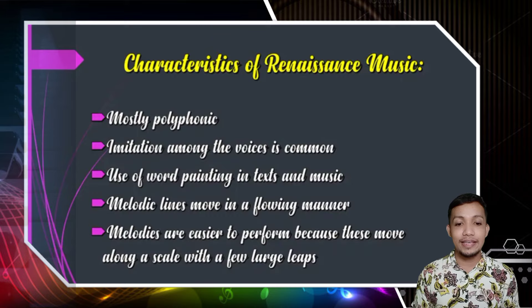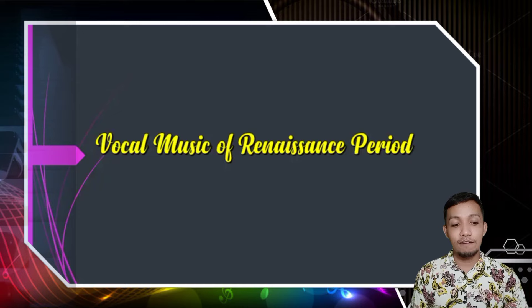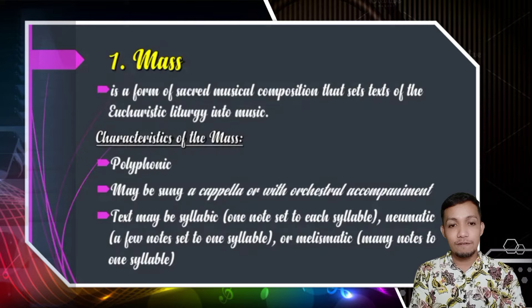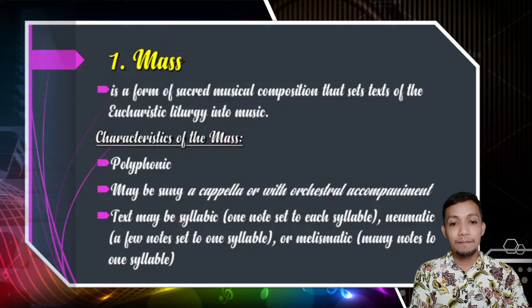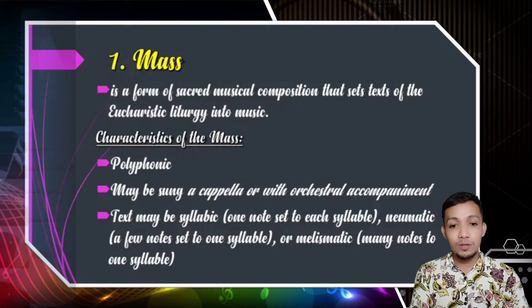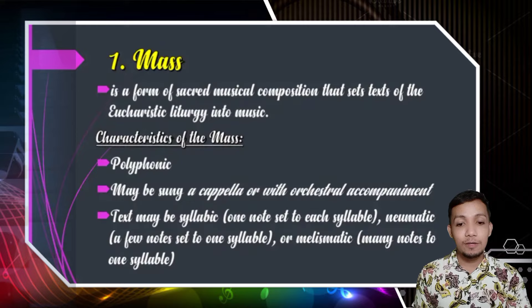Next is the vocal music of the Renaissance period. Number one is Mass. Mass is a form of sacred musical composition that sets texts of the Eucharistic liturgy into music. Characteristics of the Mass include polyphonic, maybe sung a cappella or with orchestral accompaniment. Text may be syllabic — one note set to each syllable — or pneumatic — a few notes set to one syllable — or melismatic — many notes to one syllable.